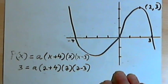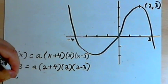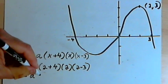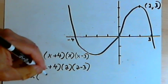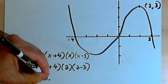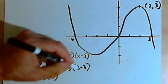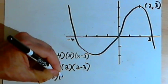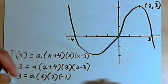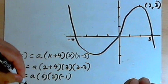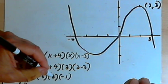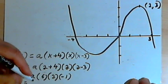So let's work that out and find out what the a is. I'm going to have 3 equals a times... 2 plus 4 is 6 times 2. 2 minus 3 is negative 1. I'll multiply those. I'm going to get 3 equals... 6 times 2 is 12 times negative 1 is negative 12.